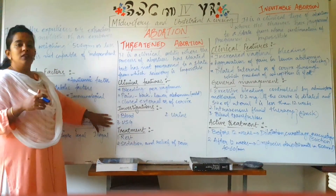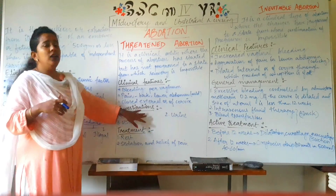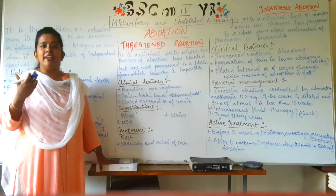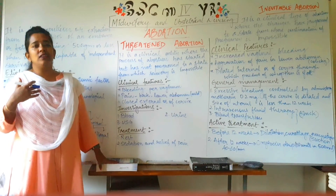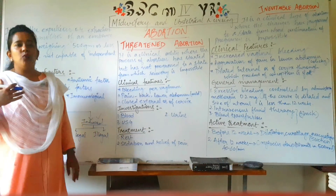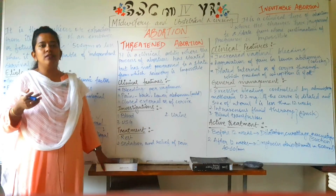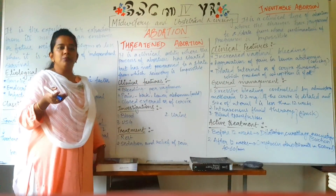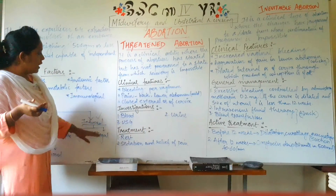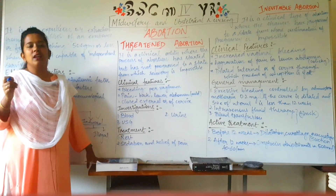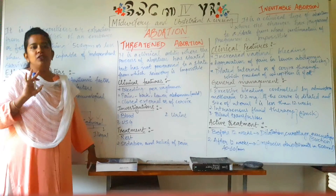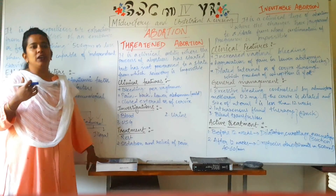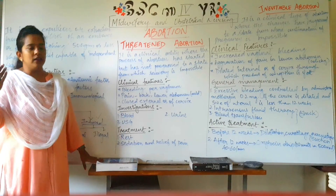Now the next part is investigations. Blood investigations are done to check hemoglobin levels. Cultures are done to identify infections and determine what has led to the progression of abortion. Urine examination is also done. USG (ultrasound) is performed to determine the position of the fetus, its location, and how much it has grown according to the period of pregnancy.